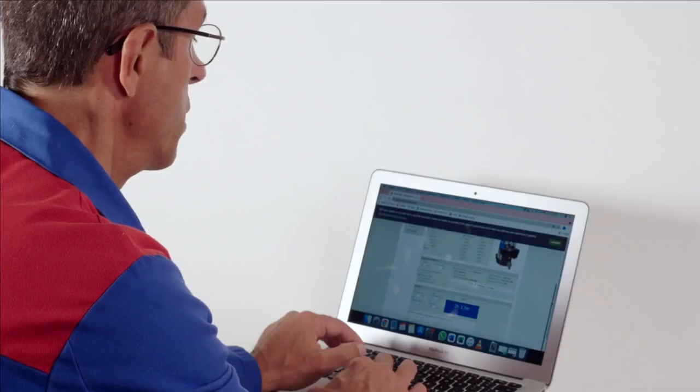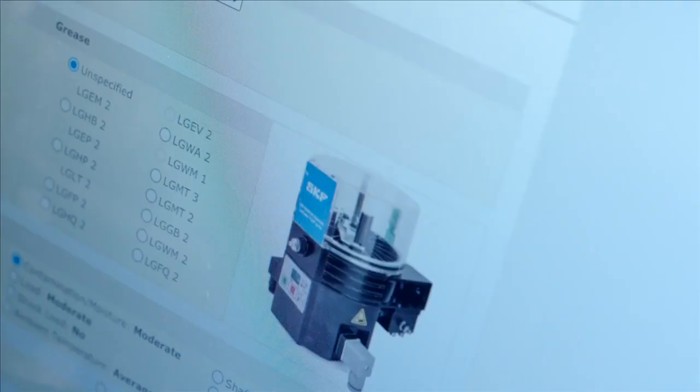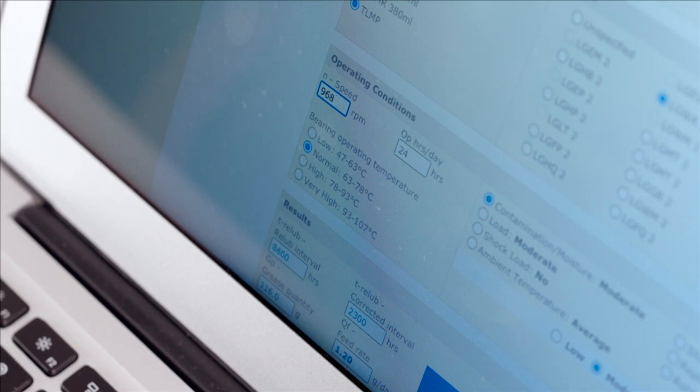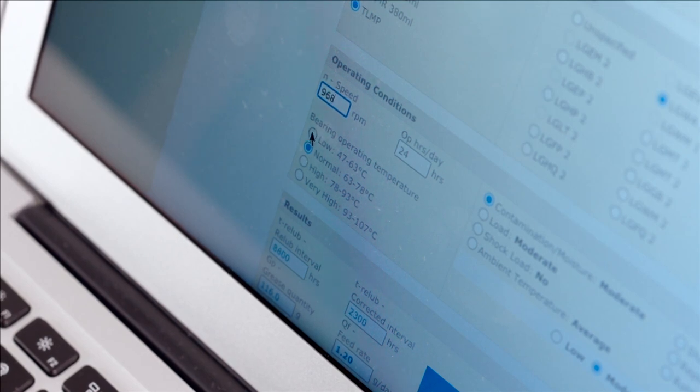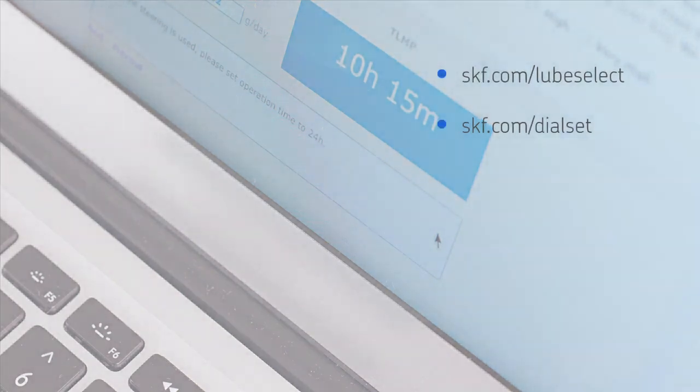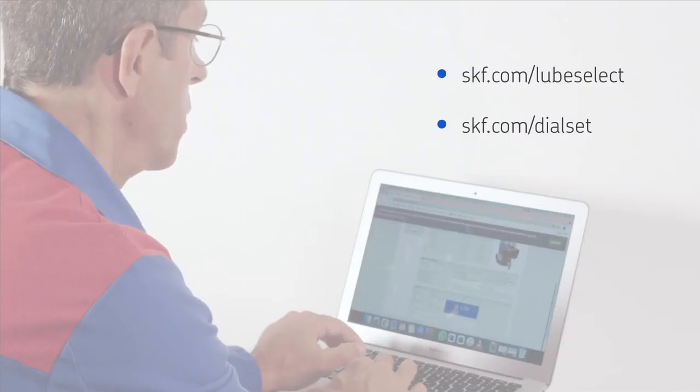You can use, amongst other methods, SKF lube select to select a choice of SKF greases according to the running condition of your machinery. And with SKF dial set, you can also identify the correct pause time to be used in the programming process of your TLMP unit. You can access both of these SKF software tools via the following links.